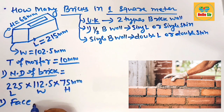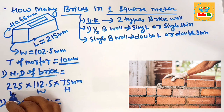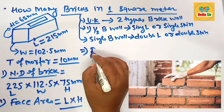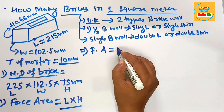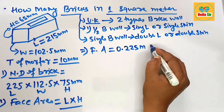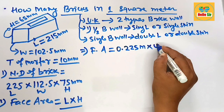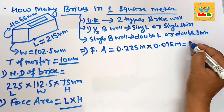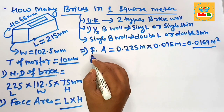Now calculate the face area of one brick. The face area equals the nominal length multiplied by the nominal height. The nominal length is 225 mm, which is 0.225 m, multiplied by the height of 75 mm, which is 0.075 m. After multiplication, this gives 0.0169 square meters — this is the face area of one brick.